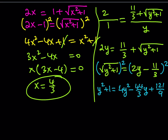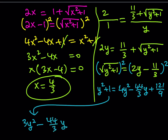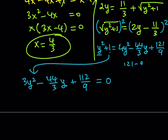Putting everything on the right-hand side: 3y squared minus 44/3 · y. Then 121/9 minus 9/9 gives 112/9. So we have 3y squared minus 44/3 · y plus 112/9 equals 0. Multiplying everything by 9 gives 27y squared minus 132y plus 112 equals 0.